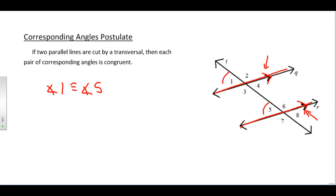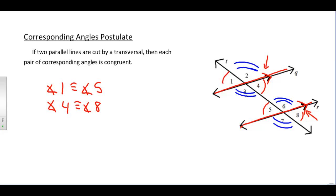We also know about vertical angles — angle 1 and angle 4 would have to be congruent. And since angles 4 and 8 are a corresponding angle set, all four angles — 1, 4, 5, and 8 — would have to be congruent to each other in this picture. The same could be said for the other set: since angles 2 and 6 are corresponding, and angles 2 and 3 are vertical, and 3 and 7 are corresponding, angles 2, 3, 6, and 7 all have to be congruent. If we understand this postulate, we can use it to understand the next three.